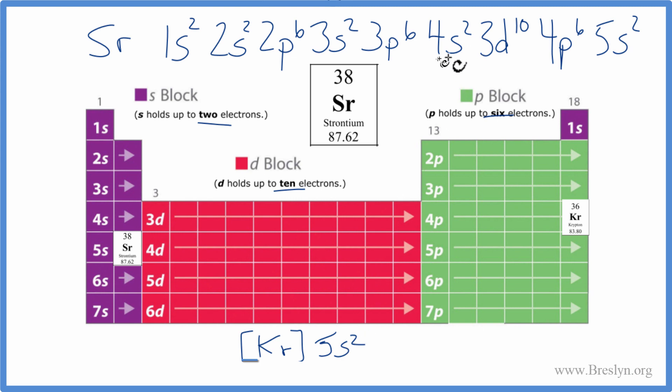One thing to note, we have the 4s before the 3d. That is correct. That's one way to write it. They're very similar in their energies. Sometimes you'll see the 3d¹⁰ before the 4s². Either way is correct. Probably in school, you'll see it this way more often.